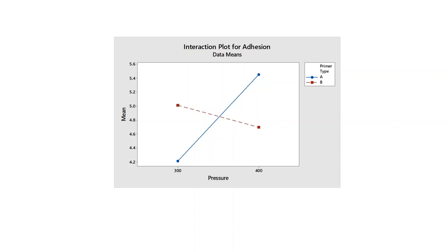Suppose we use a one factor at a time experimental strategy to study primer type and spray pressure. If we were to begin by testing both primers at one level of spray pressure, for example, 400 kPa, we would select primer A because it results in greater paint adhesion. Then we would vary spray pressure using primer A and discover that as the pressure decreases, adhesion decreases. We would conclude that primer A using high spray pressure is the best choice. The problem with this one factor at a time approach is that we did not consider the interaction between these factors.